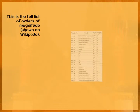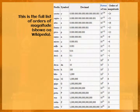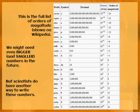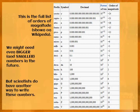Let's look at the full list of orders of magnitude — this is from Wikipedia, and you can see there are quite a few more, though you probably don't need to know all of them. We may need even bigger and smaller numbers in the future. We go all the way down to yocto, which is minus 24 orders of magnitude from one, and all the way up to yotta at the other end, which is plus 24 orders of magnitude. But we do have another way to write out very small and very large numbers, and we'll look at that next time.